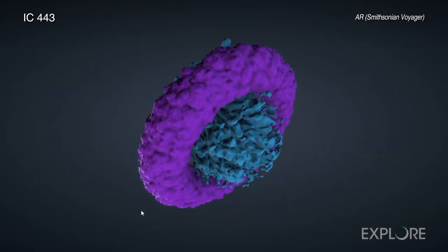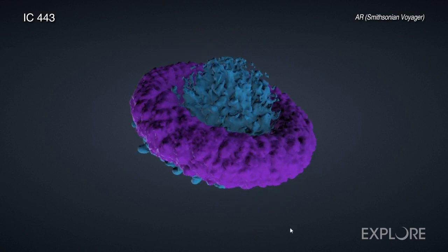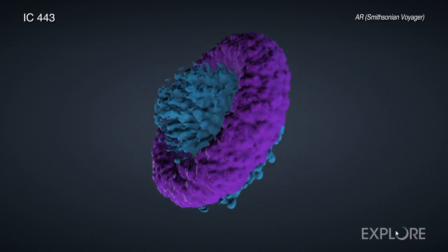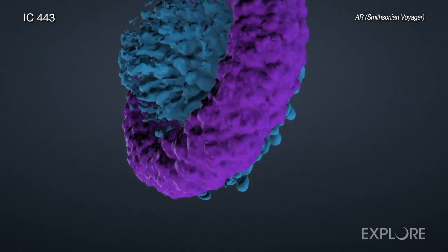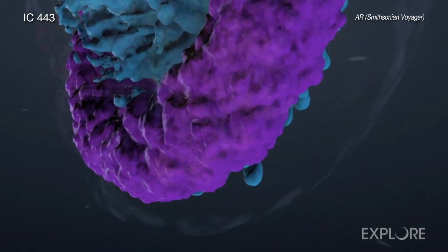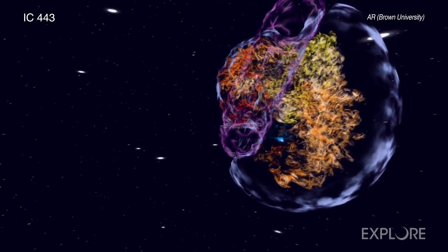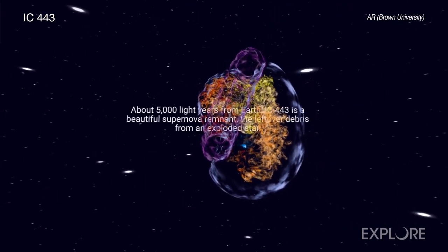The inclusion of the Chandra collection in Voyager coincides with the release of Chandra's latest 3D model, a stunning supernova remnant, that is, the remains of an exploded star, called IC443, located about 5,000 light-years from Earth.